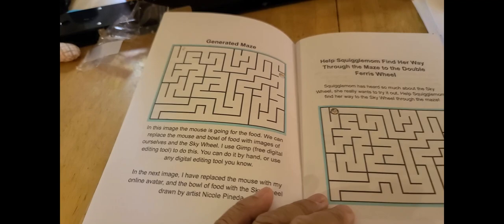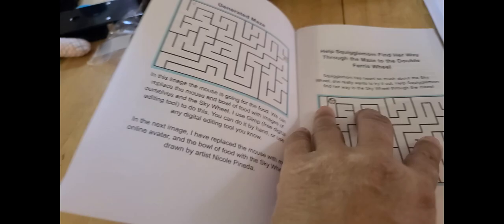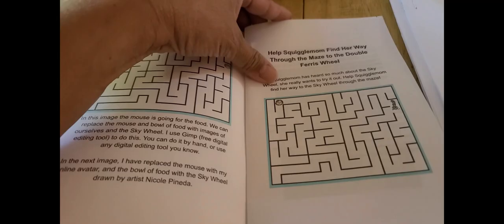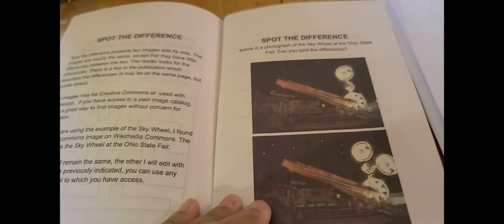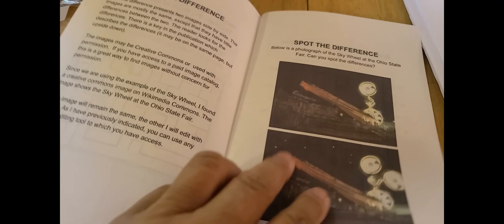So we took the maze and then I removed the two objects. And then I put me, Squiggle Mom, and the very tiny Sky Wheel. And then we worked on spot the differences. At the same time, I made videos on how to make all of these, not the spot the difference. That one's a little more convoluted.